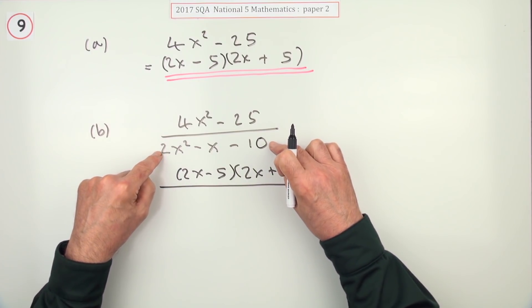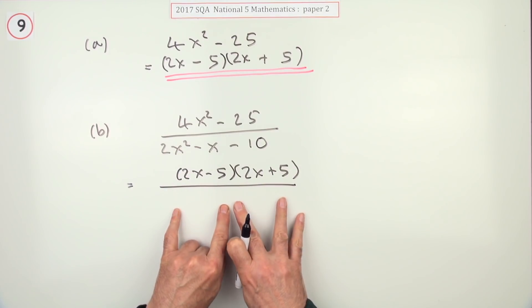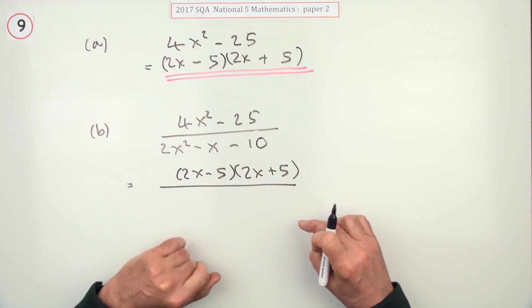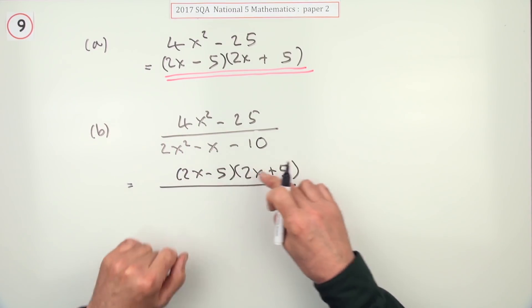That when you do have to factorize the bottom, which will again be two parts because this time this quadratic has got all three parts, it is a trinomial, one of them is going to be the same as one of those.